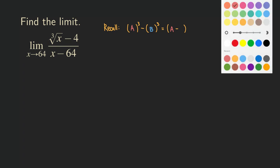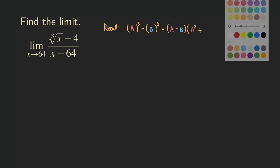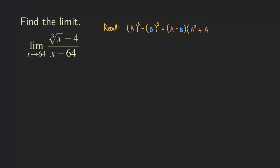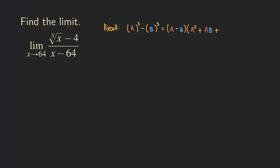So we have A minus B times a trinomial. The trinomial is A squared, plus A times B — the two terms multiplied together to form the middle term — and then lastly B squared. So that's how we factor the difference of two cubes.